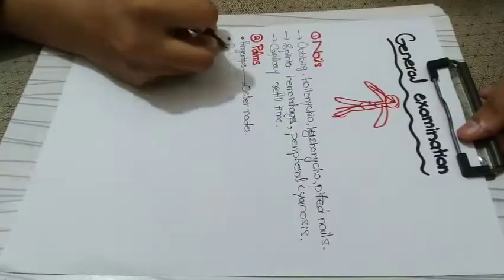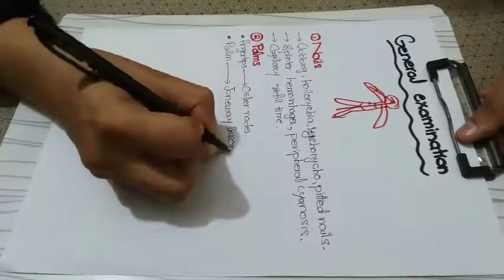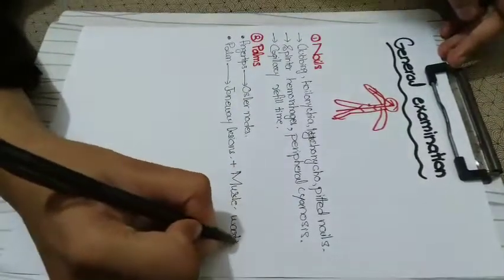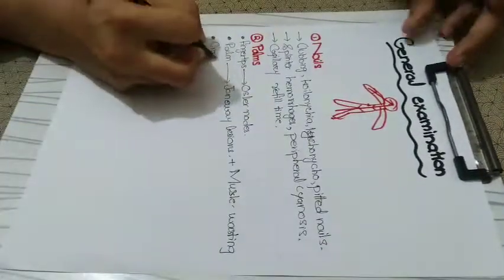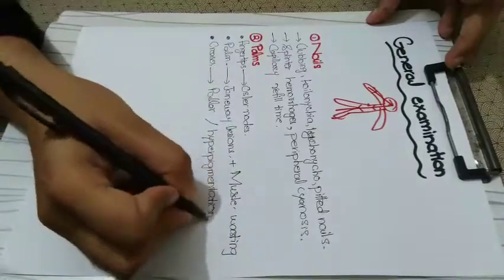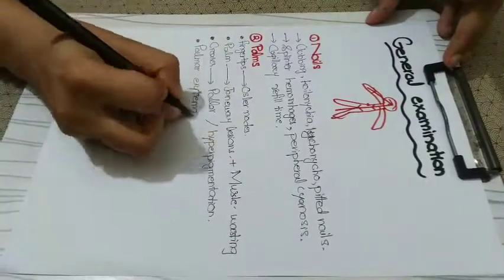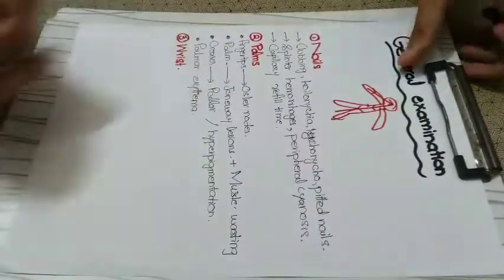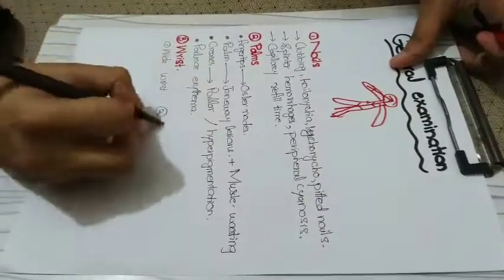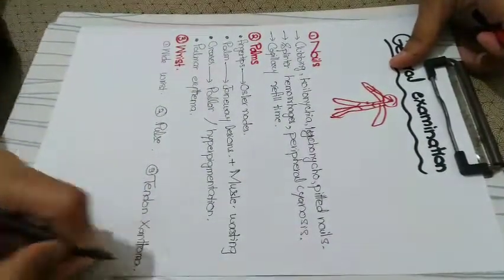Number two, we check the palms: check the fingertips for Osler nodes, and the palms for Janeway lesions. Also check for muscle wasting of the thenar and hypothenar muscles, the creases for pallor or hyperpigmentation, and also check for palmar erythema.